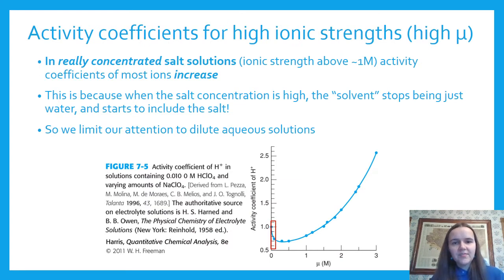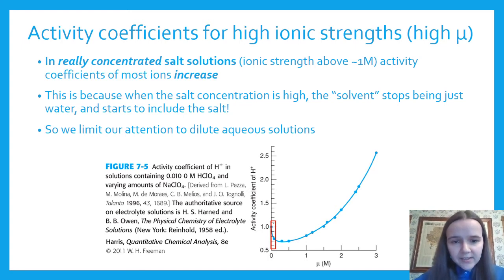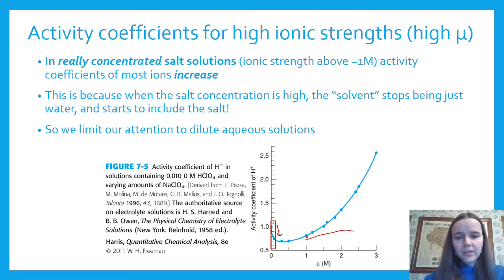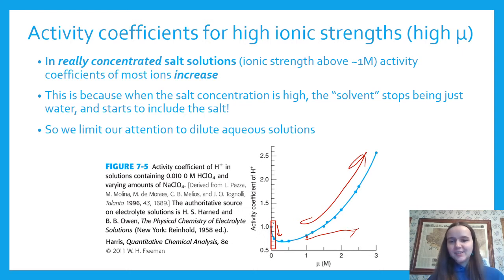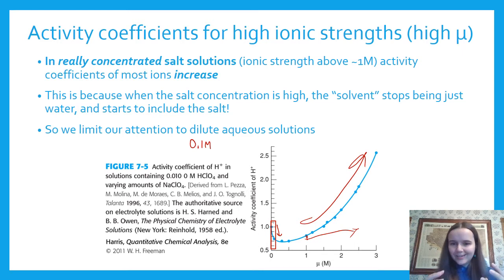Another caveat: at very high ionic strengths, the trend of higher ionic strength causing smaller activity coefficients only holds at low concentrations. If you get to a really concentrated salt solution — greater than one molar — activity coefficients actually increase. That's because the salt starts becoming part of the solvent; this is essentially a matrix effect. When talking about activity and ionic strength, we limit our attention to dilute aqueous solutions — about 0.1 M or less — where we have the trend we can model.